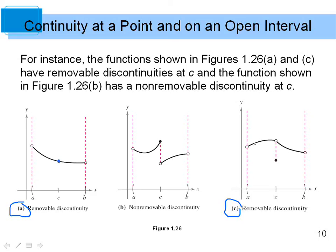Figures a and c have removable discontinuities — if you fill in that one spot along the curve, you have a continuous graph you can trace without any breaks. Figure b has a non-removable discontinuity: even if you fill in the open spot, it's defined in two places and you still have to make a leap to finish the graph. For a removable discontinuity, filling it in allows a complete sweep of the graph without lifting your pen.